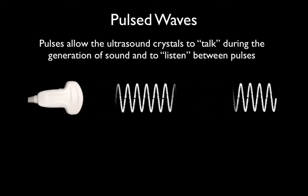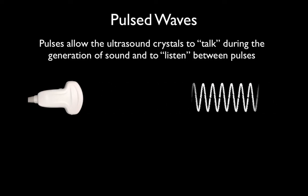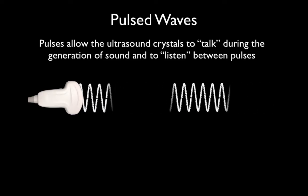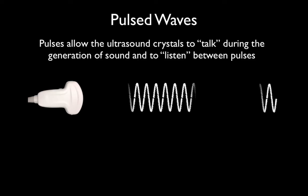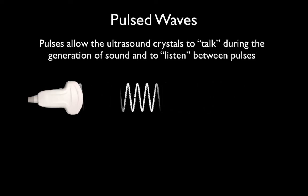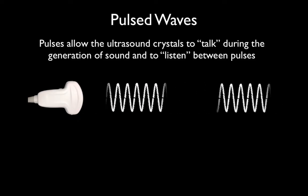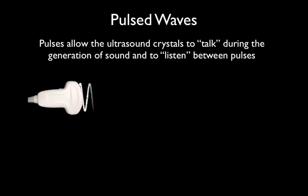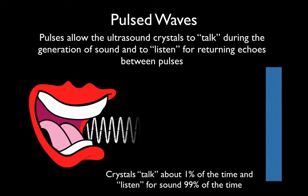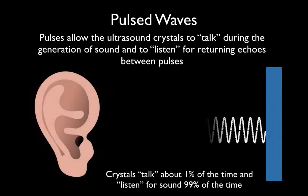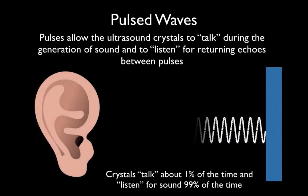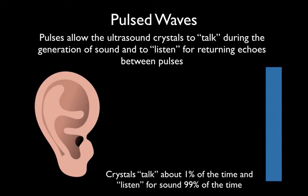An ultrasound probe that transmitted continuously could never hear the returning waves. Instead, waves go down, hit a structure, and come back. The probe interprets the returning waves — their intensity and amplitude — and determines what structure is present and what brightness to assign on the grayscale display. This is called pulsed wave: the crystals talk and then listen in between pulses. Remarkably, crystals talk about 1% of the time and listen the other 99%.